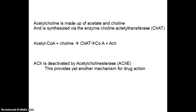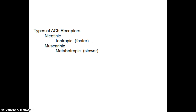This also provides another mechanism for drug action. Not only can we influence the drug through the production of acetylcholine or through choline acetyltransferase, but we can also interrupt or interfere with acetylcholinesterase, and therefore modulate the function of acetylcholine through various drugs. There are two types of acetylcholinergic receptors: nicotinic, which is an ionotropic receptor, and muscarinic, which is a metabotropic receptor. Ionotropic receptors are faster; metabotropic receptors are slower because they are coupled to a G protein. This gives us two different mechanisms through which to affect acetylcholine's impact on the nervous system.